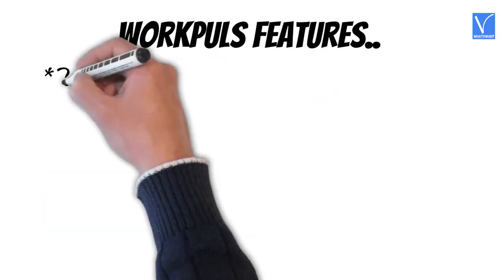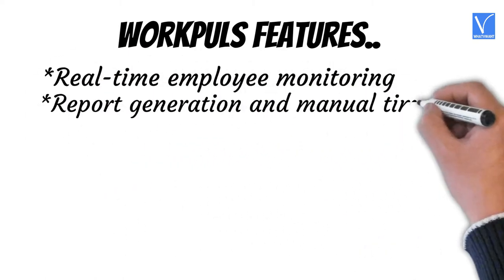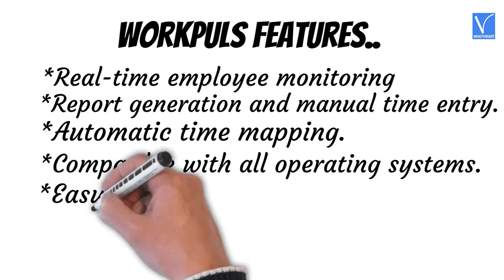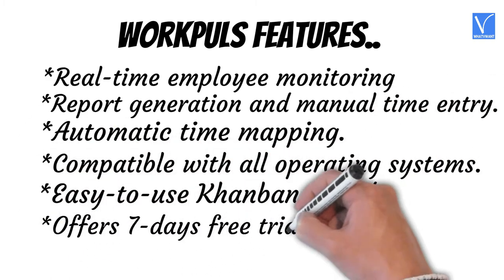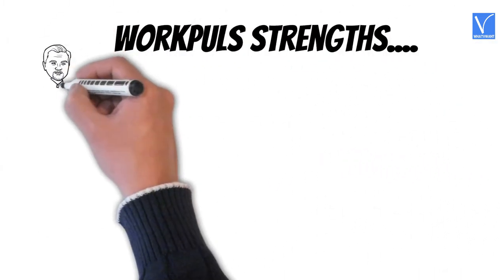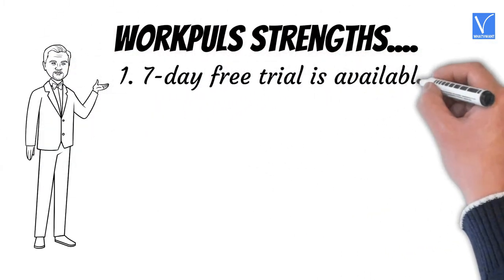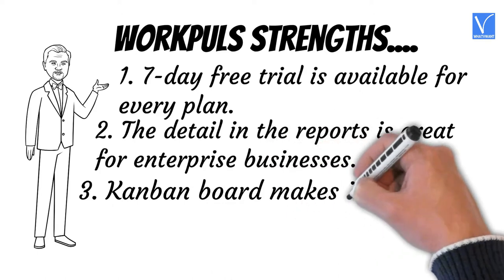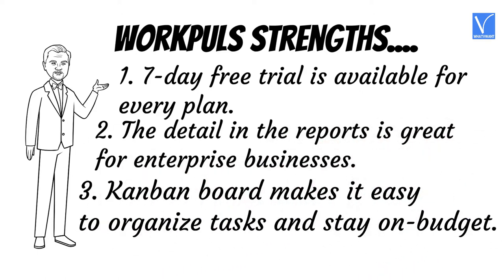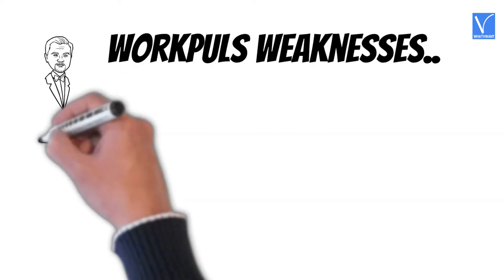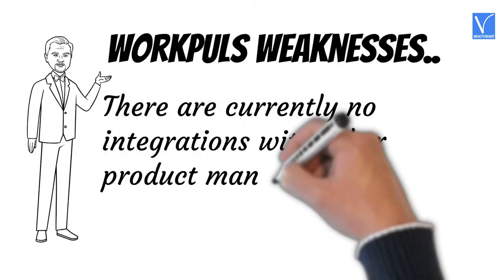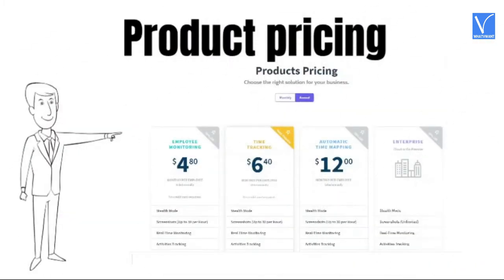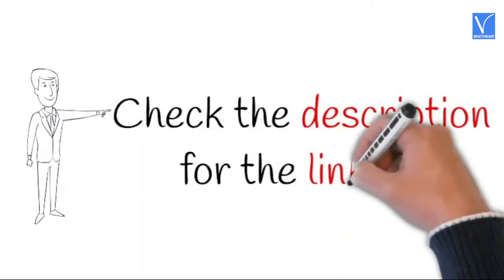Workpulse features: real-time employee monitoring, report generation, manual time entry, automatic time mapping, compatible with all operating systems, easy-to-use Kanban board, and offers a seven-day free trial. Workpulse strengths: seven-day free trial available for every plan, detailed reports great for enterprise businesses, and Kanban board makes it easy to organize tasks and stay on budget. Workpulse weaknesses: there are currently no integrations with other product management software. Price and plans are displayed on the screen — check the description for the product link.